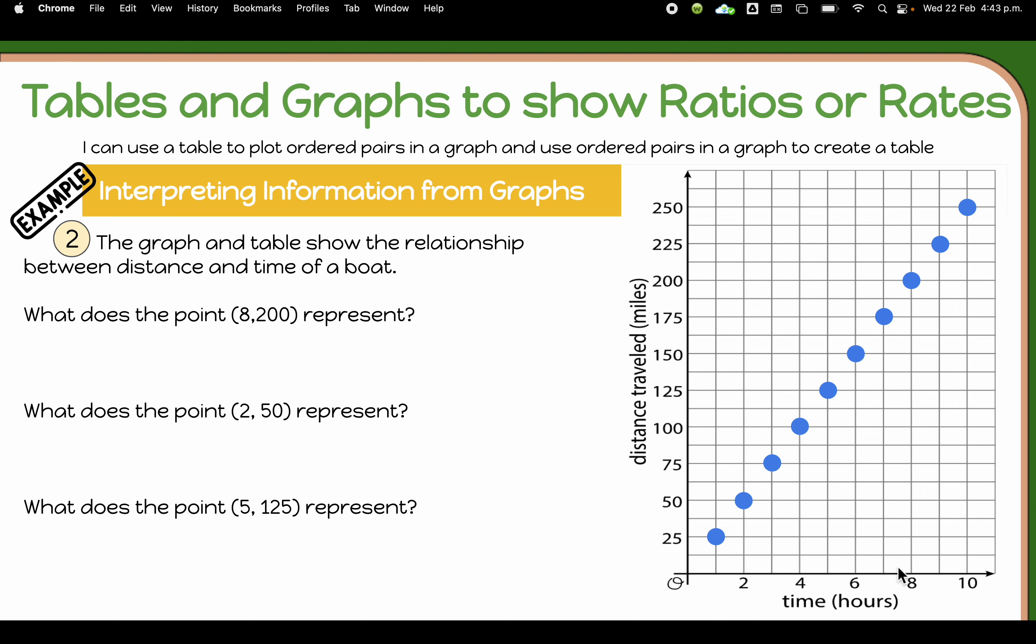Let's find the point 8,200, so 8 here and then 200 right here. So what does this point here tell us? Well, we can see that 8 represents the time. So we have 8 hours, and here across, we have 200 miles. So the point tells us that the boat traveled 200 miles in 8 hours.